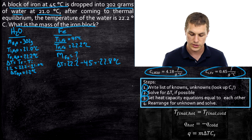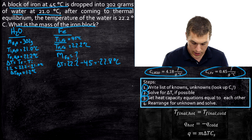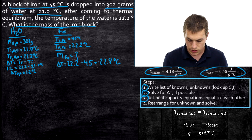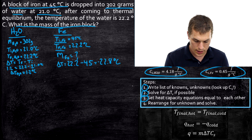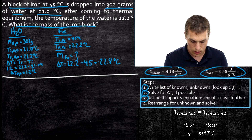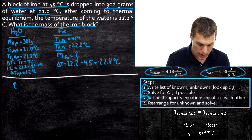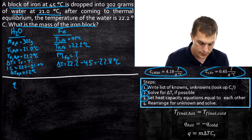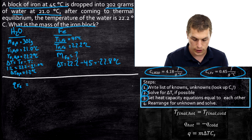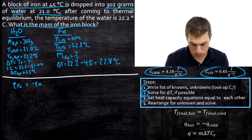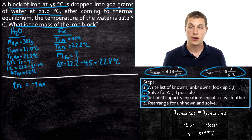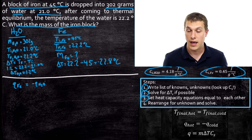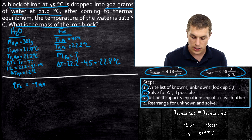Step three is really key: set the heat capacity equations equal to each other. Remember that the heat lost by our hot thing is equal to the heat gained by our cold thing. So q_iron equals negative q_water. We can take our specific heat capacity equation — q equals m × Cs × delta T — and plug it in anywhere we see q.